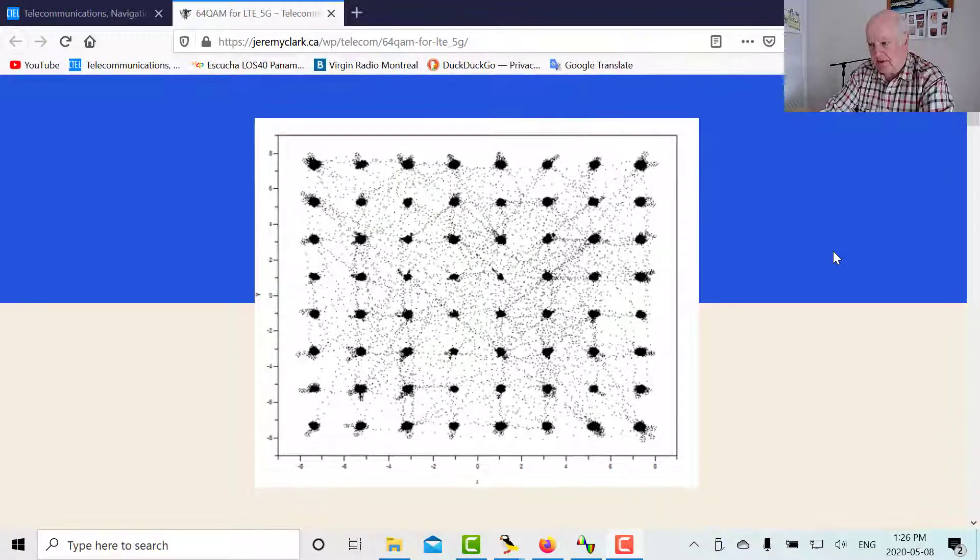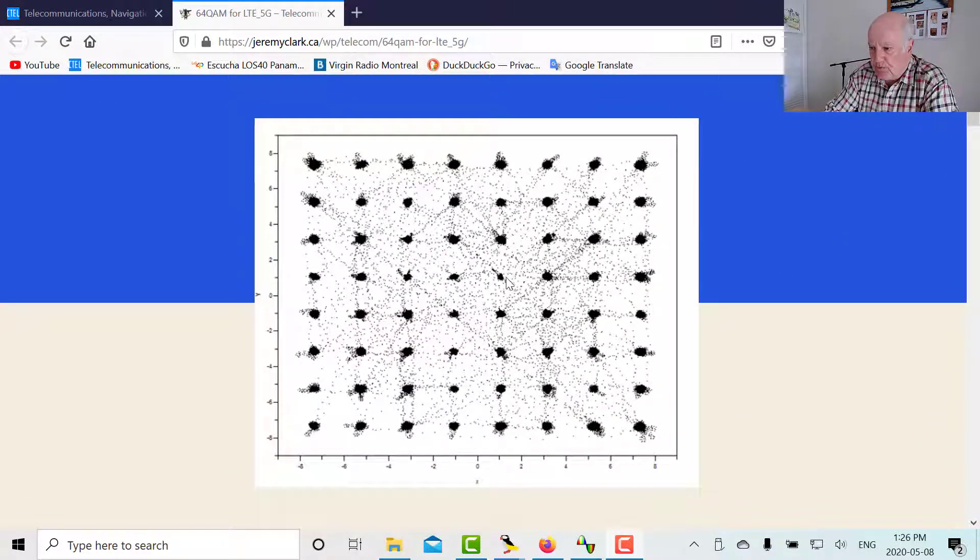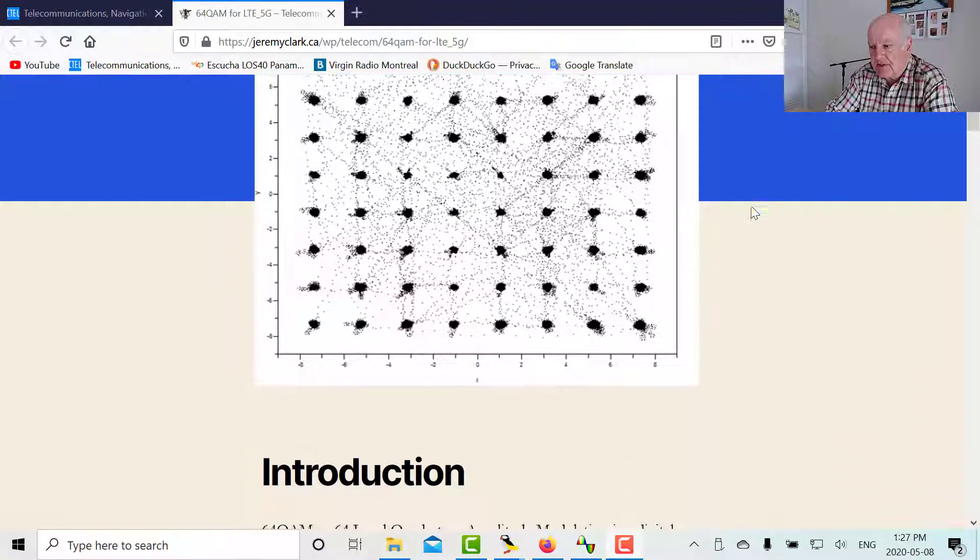And there's a screenshot of the constellation diagram. Each one of these points represents 6 bits. 64 is 2 to the power of 6. So in every symbol that's transmitted, it'll represent 6 bits. So this point is a particular combination of 6 bits. This is another combination of 6 bits. So all these 64 points represent every combination of the 6 bits.